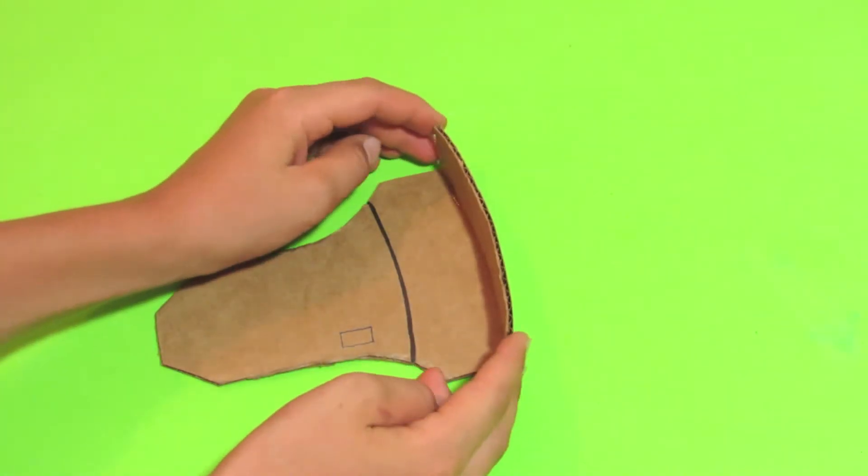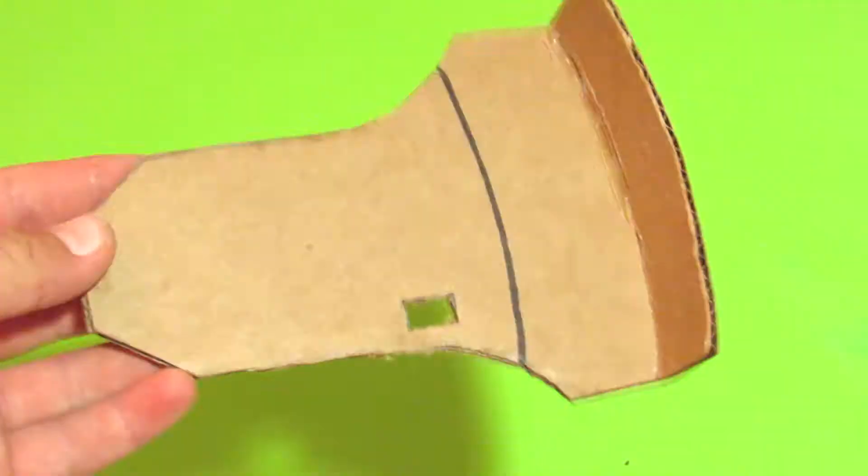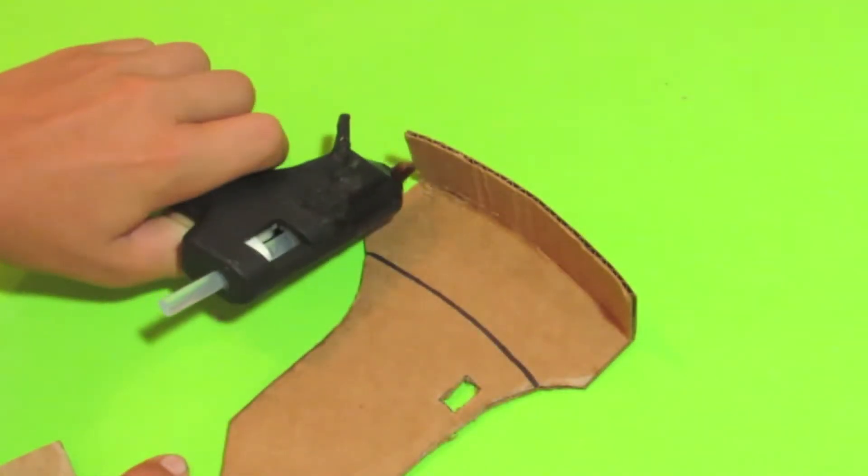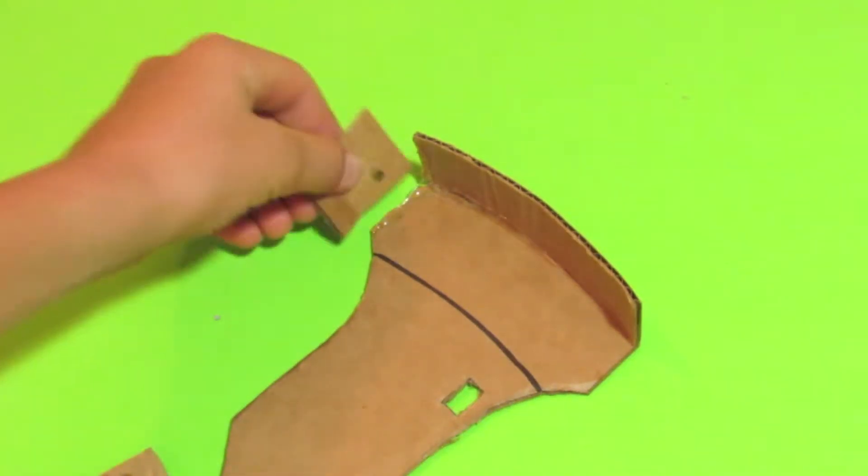So first you're going to glue the front part onto the base of your three-wheeler. Then you're going to cut out a small rectangle for the switch. Then you're going to glue these two side pieces on that hold the axle in place.